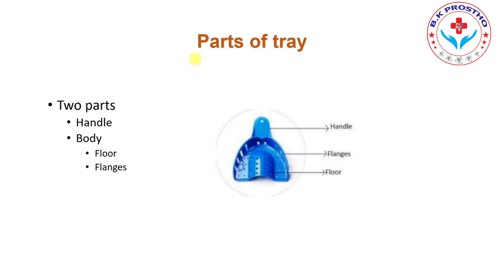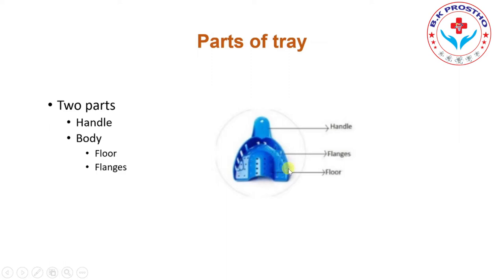What are the different parts of the Impression Tray? The Impression Tray has two parts: the handle, and the body of the tray. The body of the tray again has its floor and flanges.